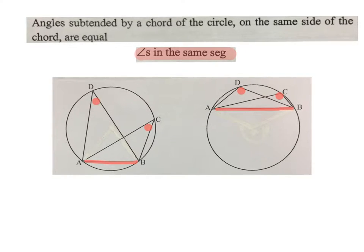Same over here. These two angles D and C are also subtended by AB, and both D and C lie on the same side of this chord. When we use this theorem in our riders, our abbreviation will be angles in the same segment.